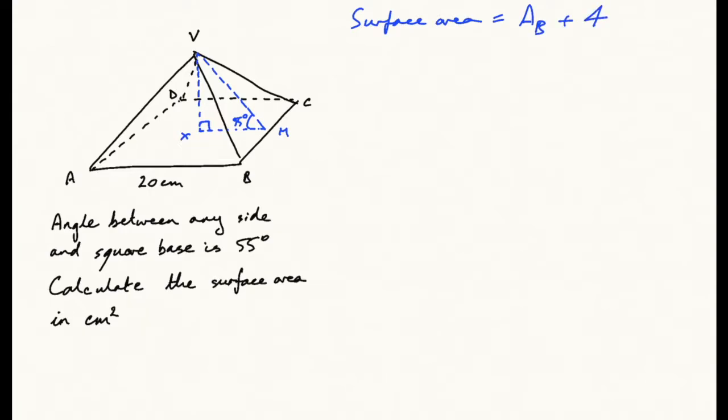plus four sides. This is a five mark question. Let's start off and pick up the easy mark—the area of the base. This is going to be 20 squared, which equals 400 square centimeters.